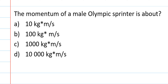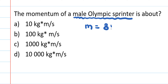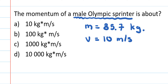Now let's get into some momentum calculation questions. This question asks about the momentum of a male Olympic sprinter. The mass of a male Olympic sprinter is roughly 85.7 kilograms, and a sprinter can complete the 100-meter dash in around 10 seconds, so the speed is approximately 10 meters per second.